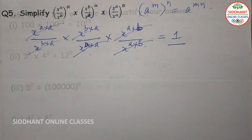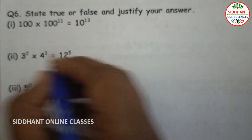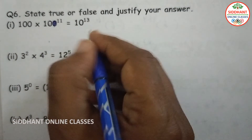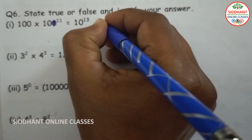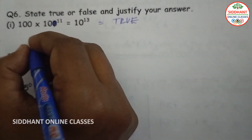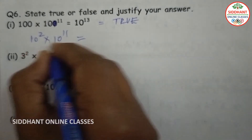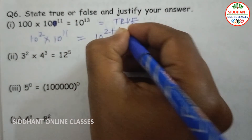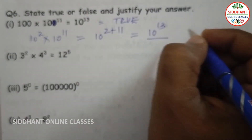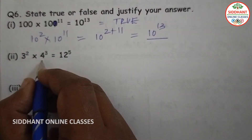Question number 6 — state true or false and justify your answer. First one: 100 into 10 to the power of 11 equals 10 to the power of 13. The statement is true. 100 can be written as 10 to the power of 2, so 10 to the power of 2 into 10 to the power of 11 equals 10 to the power of 13.